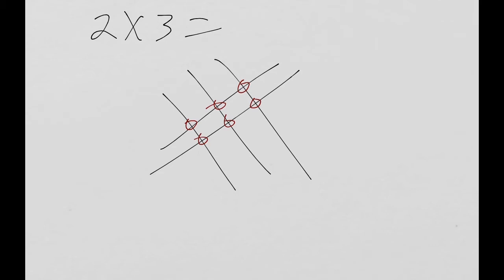So all you have to do is count 1, 2, 3, 4, 5, 6, and you arrive at the number 6. And that is the answer to the question 2 times 3. It's that simple.